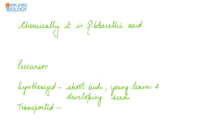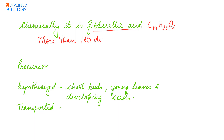Chemically it is gibberellic acid, with the formula C19H22O6. More than one hundred different types of gibberellins are known, of which GA3 is the most common.